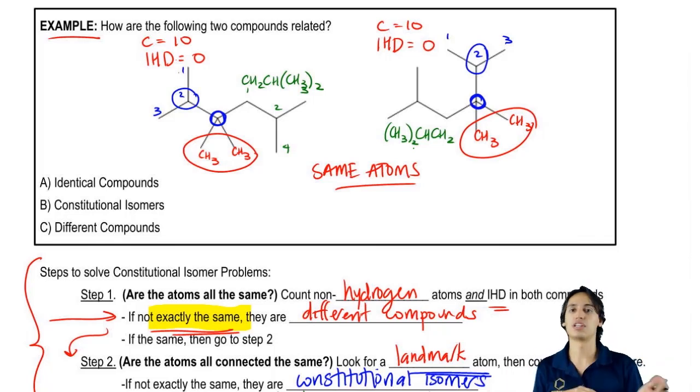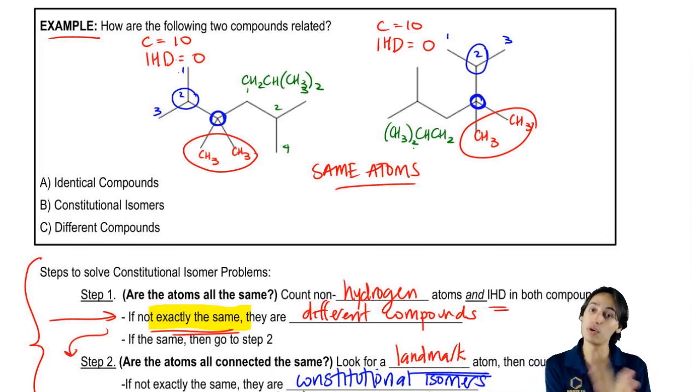Now I just drew the condensed structure, the condensed formula going the other way. So it turns out that these molecules are exactly the same. They were just rotated in different ways. Now I don't want you to try to visualize, oh, if I flip this, it would be that.